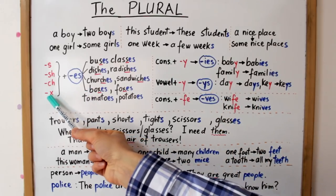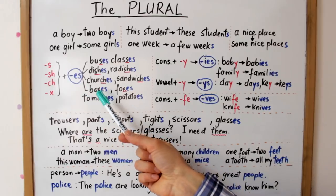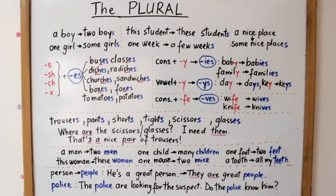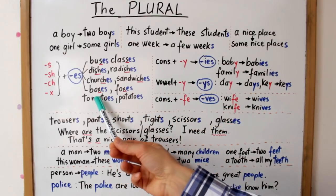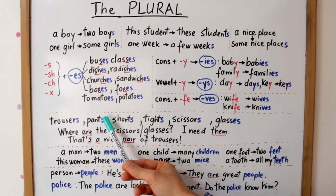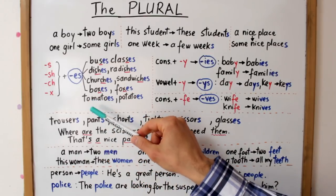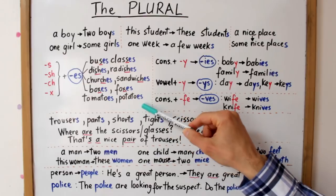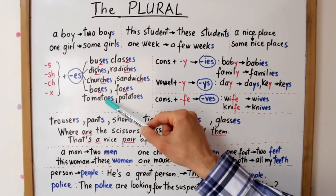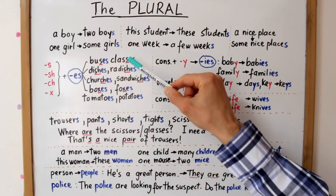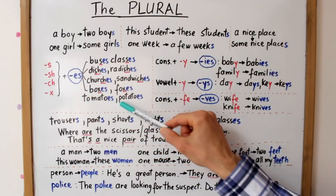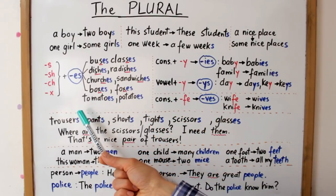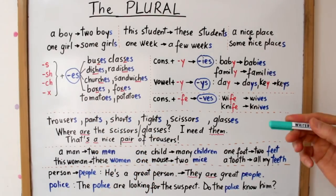La fel și pentru substantive terminate în X: box / boxes (cutie / cutii); fox / foxes (vulpe / vulpi). Această regulă cu ES se aplică și în cazul denumirilor de legume tomato și potato. Terminația este ES, dar atenție la pronunție: se spune TOMATOES și POTATOES — deci cu Z, nu IZ ca mai sus. În engleza britanică se aude mai degrabă TOMATOES.